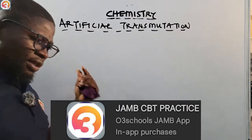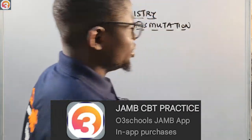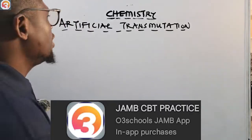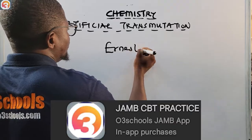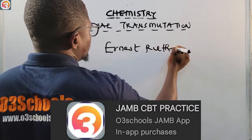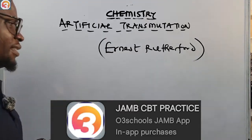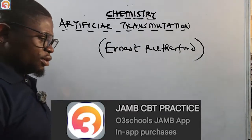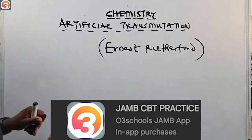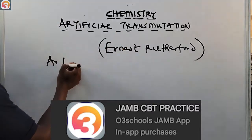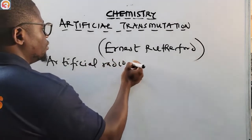Now, artificial transmutation was first described by a British physicist, Ernest Rutherford.